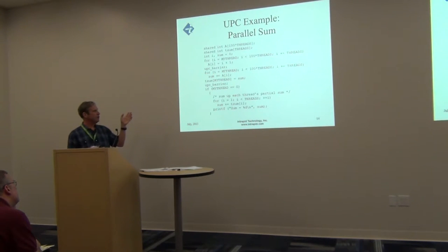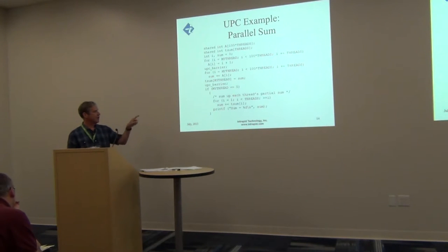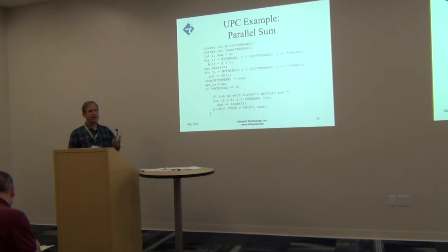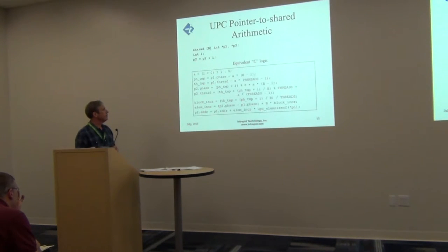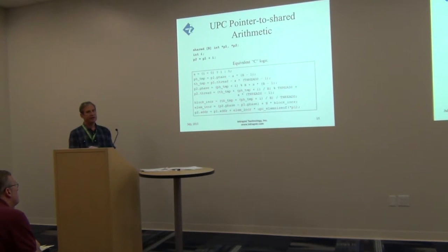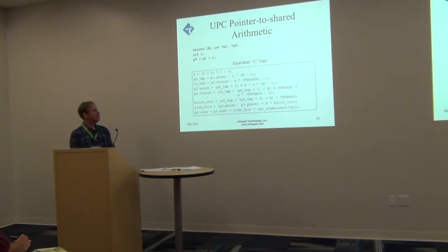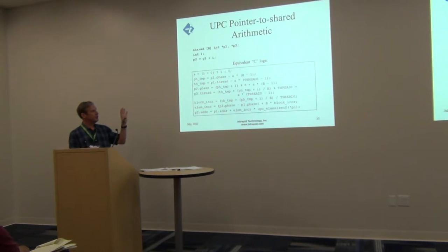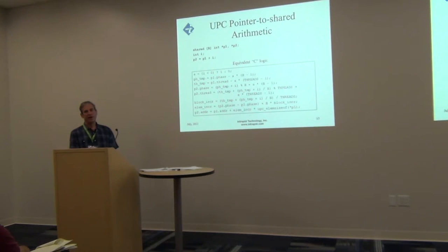Thread zero executes the final summing operation. When all threads reach exit, there's an implied barrier, and they all exit together. The fat pointer has three components: the thread component, an offset into the thread's shared address space, and a phase. The block size b is always a constant. The inset shows the general form of pointer arithmetic for p1+i, which involves a fair number of divides and remainders. The first assignment to A must also handle whether i is negative, because C's modulo rules differ from the mathematical definition.